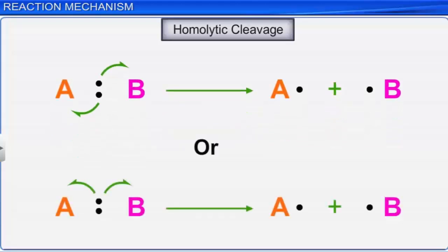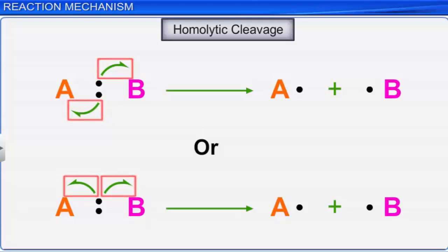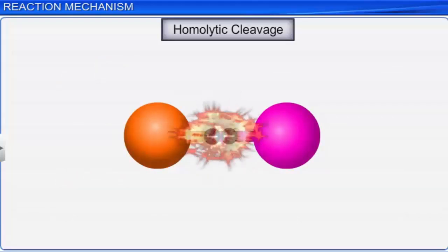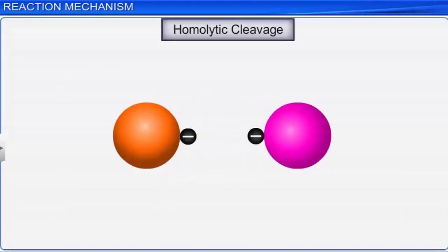A fish hook or half-headed arrow is used to show the movement of a single electron. Homolytic cleavage results in the formation of neutral atoms or groups with one unpaired electron, known as free radicals.